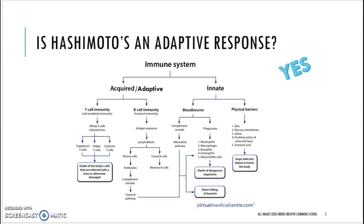Innate immunity is like the wall of a city — it can defend against all attackers and is not specifically targeted for a particular pathogen. When it needs assistance, it signals the other side of our immune system: the adaptive or specific immunity.